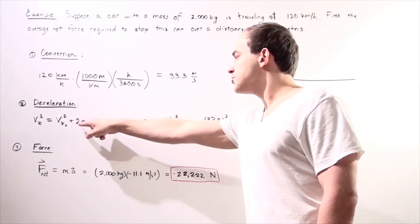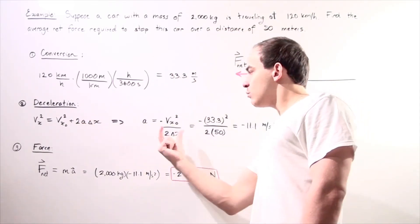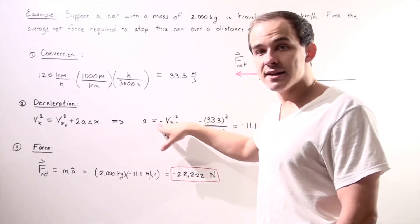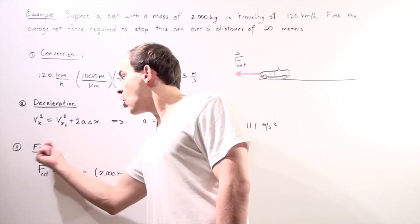So we rearrange, and we bring a to one side. And we see that our a is, in fact, negative, because when we bring this over, it becomes negative.